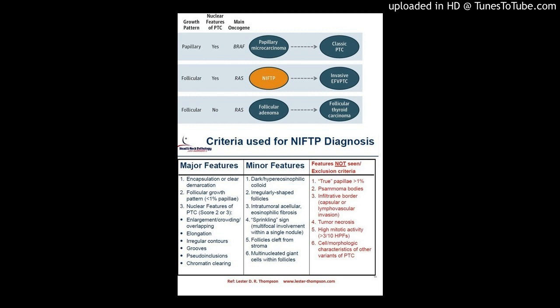Conclusions: the institutional frequency of NIFTP histopathology diagnosis and cytology baseline data will impact the ROM associated with specific FNAC diagnoses, especially among the indeterminate TBSRTC categories. The range of ROM for each TBSRTC diagnostic category is reflective of the inherent diagnostic thresholds and inter-observer and inter-institutional variability in the diagnosis of thyroid lesions. Cancer Cytopathology 2017, American Cancer Society.